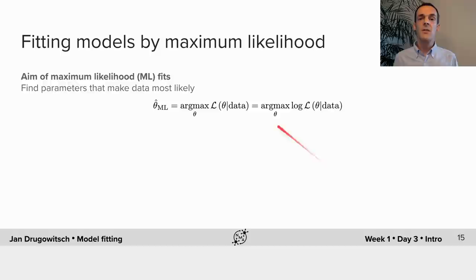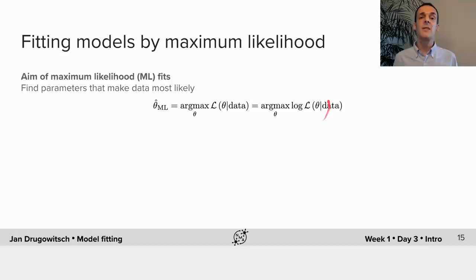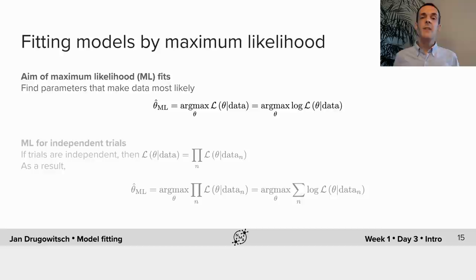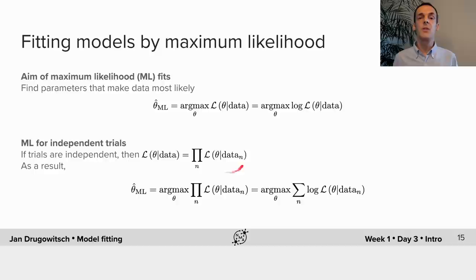As likelihoods relate to probabilities, they usually take on very small values, which might result in numerical issues. So instead of maximizing the likelihood itself, we maximize the log likelihood, which is numerically more stable. This works because the log is monotonically increasing, so the parameters that maximize the likelihood will be the same as those that maximize the log likelihood. Furthermore, when data can be assumed to be statistically independent across trials, the likelihood across trials can be written as a product of per-trial likelihoods. As a consequence the maximum likelihood parameters are the ones that maximize the product of per-trial likelihoods, which is the same as maximizing the sum of per-trial log likelihoods.